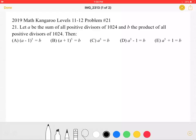This is the 2019 Math Kangaroo Levels 11-12 Problem Number 21. Let A be the sum of all positive divisors of 1024 and B the product of all positive divisors of 1024. Then which of the following must be true?